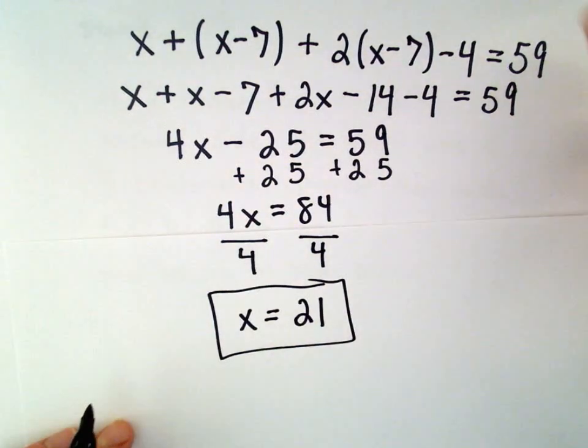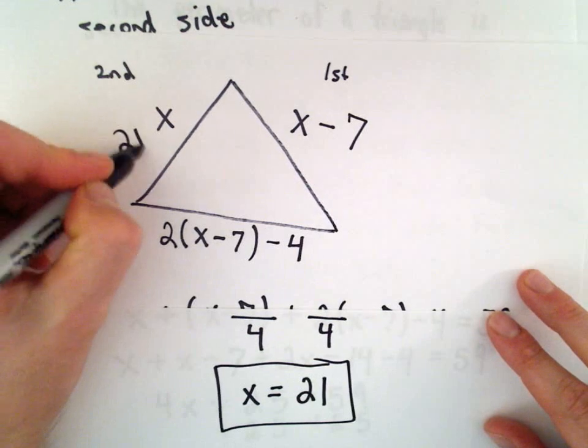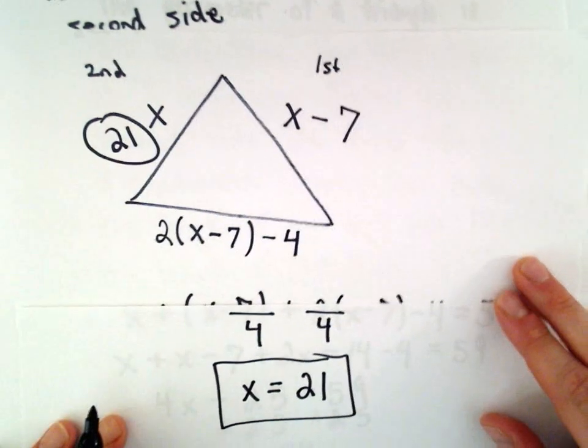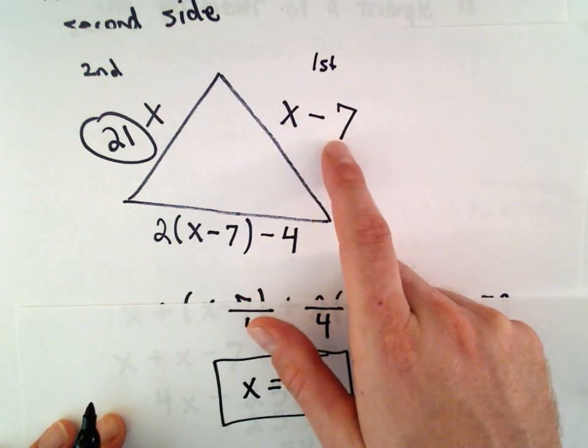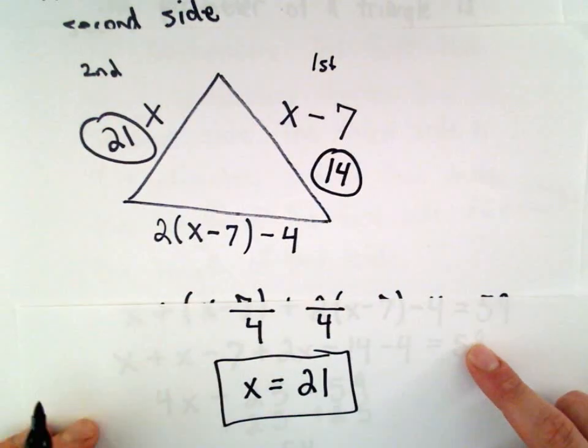That is going to be the length of one of our sides. We can just plug in x equals 21. To get the length of the other side, well, 21 minus 7 is going to give us 14.